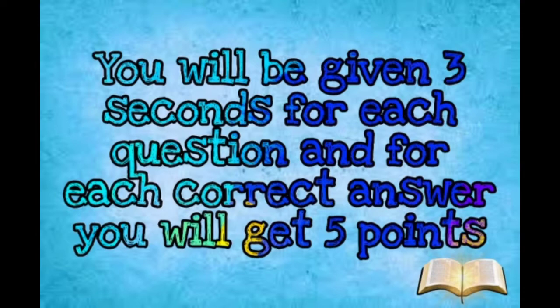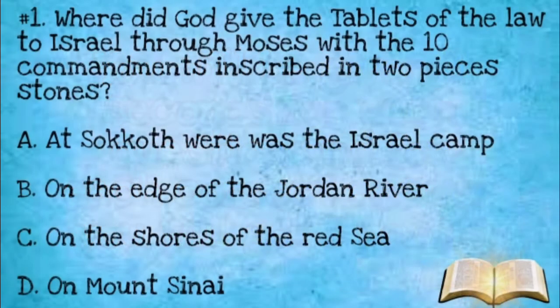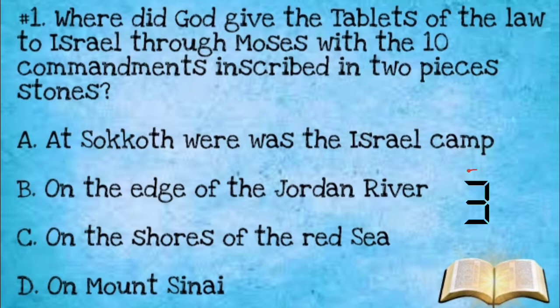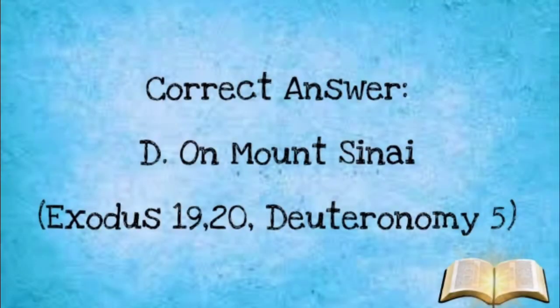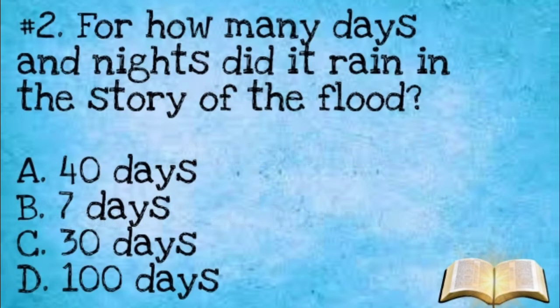Number one: Where did God give the tablets of the law to Israel through Moses, with the Ten Commandments inscribed in two pieces of stone? A: Where the Israel camp was. B: On the edge of the Jordan River. C: On the shores of the Red Sea. D: On Mount Sinai. The correct answer is letter D, on Mount Sinai.